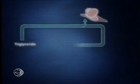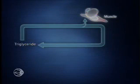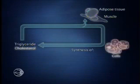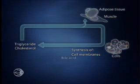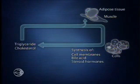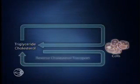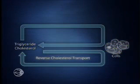This system cycles triglycerides for distribution to muscle for energy use or to adipose tissue for storage, and it cycles cholesterol for distribution throughout the body for cell membrane, bile acid and steroid hormone synthesis. A complementary cycle, called reverse cholesterol transport, completes the system.